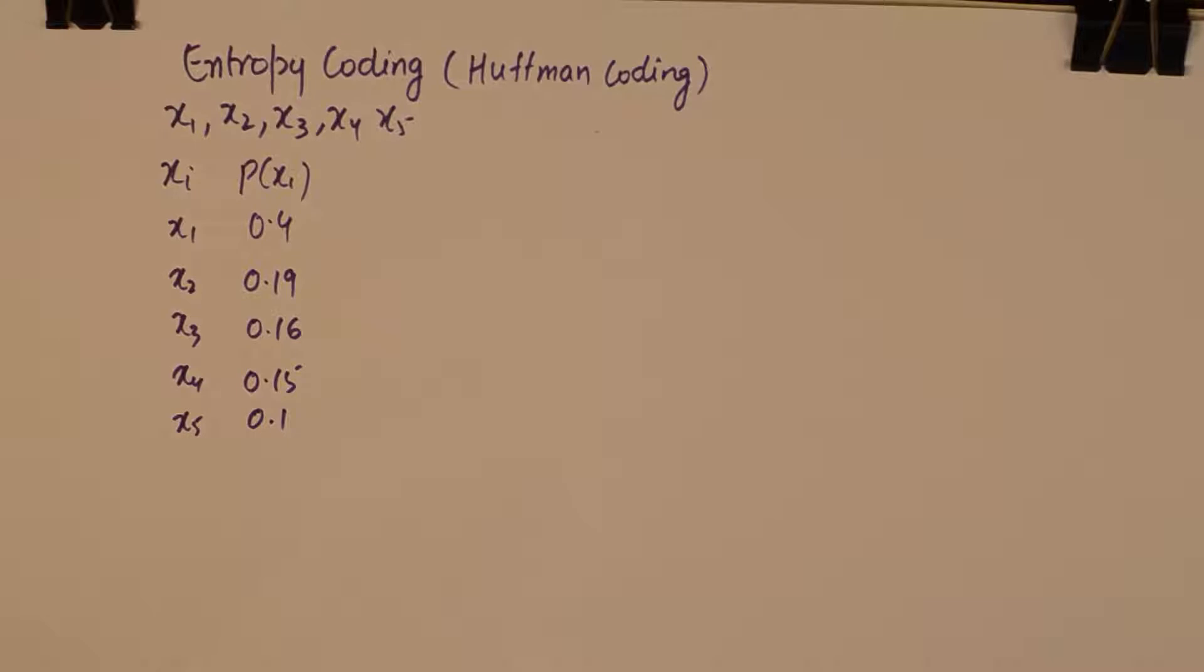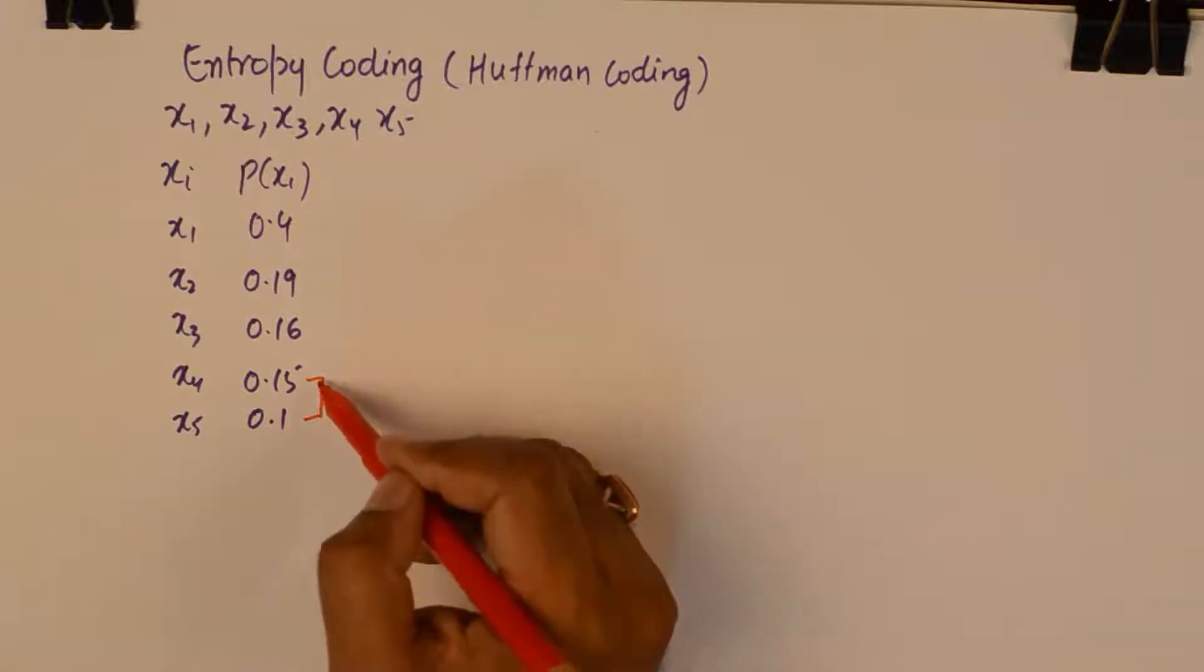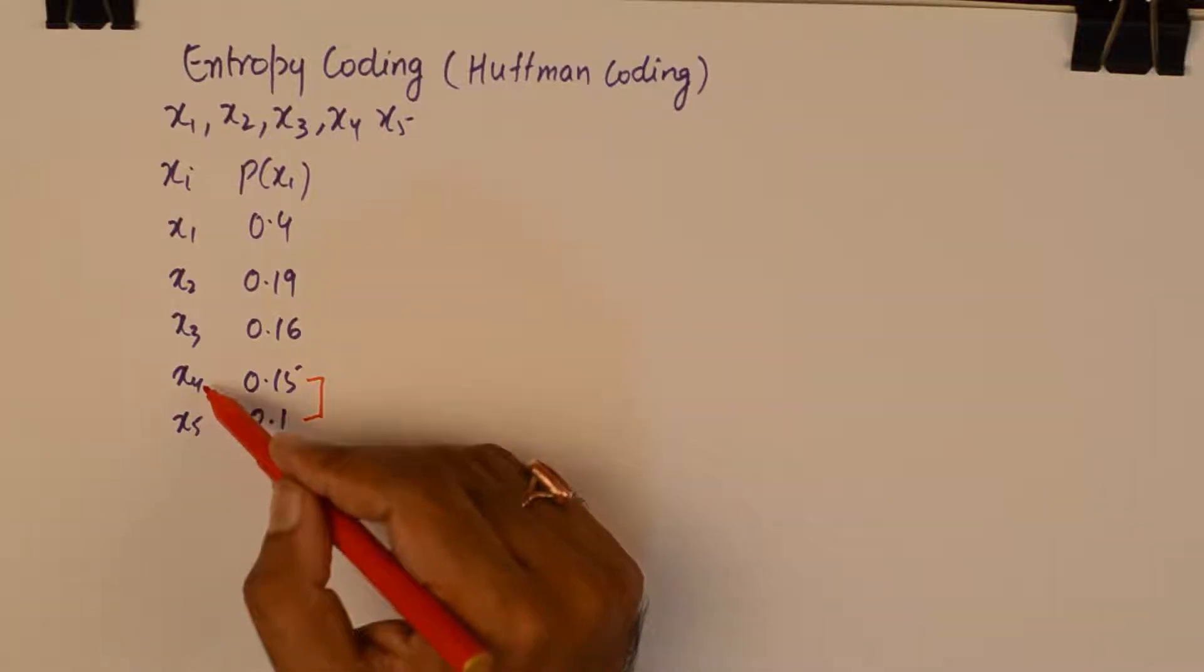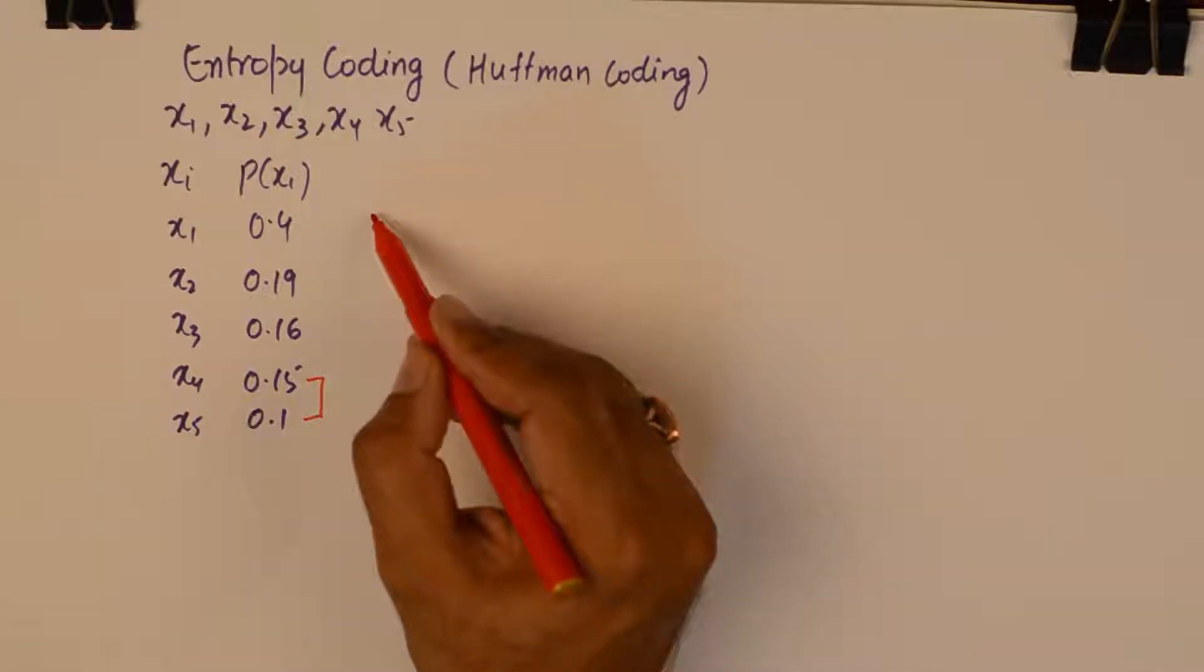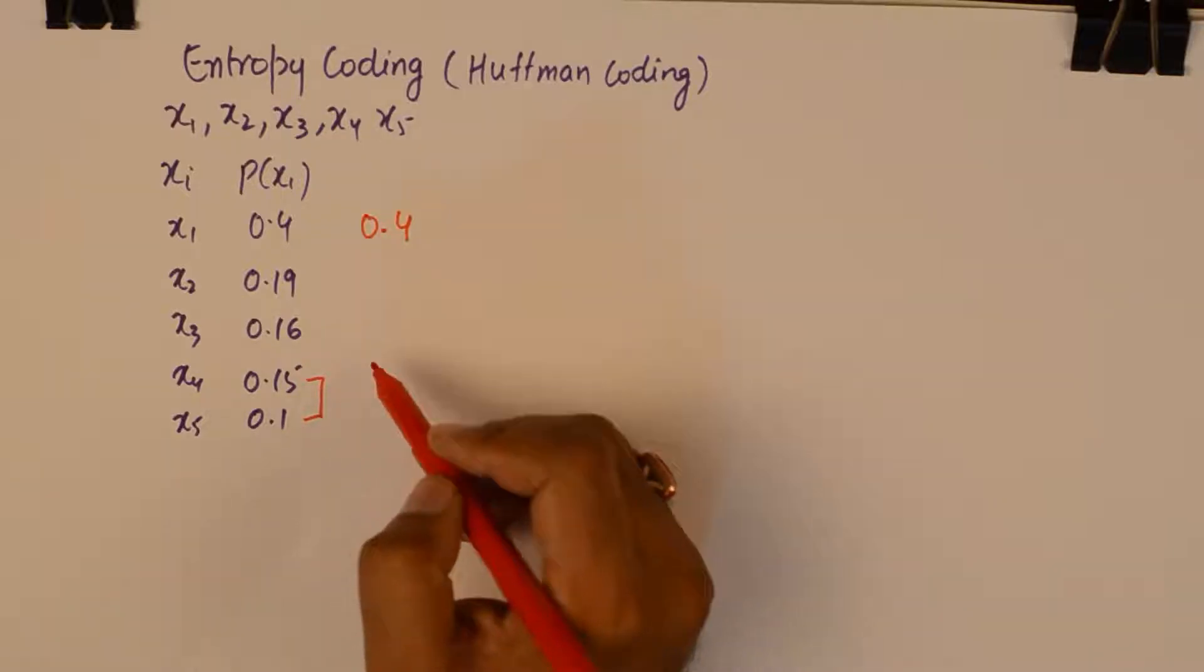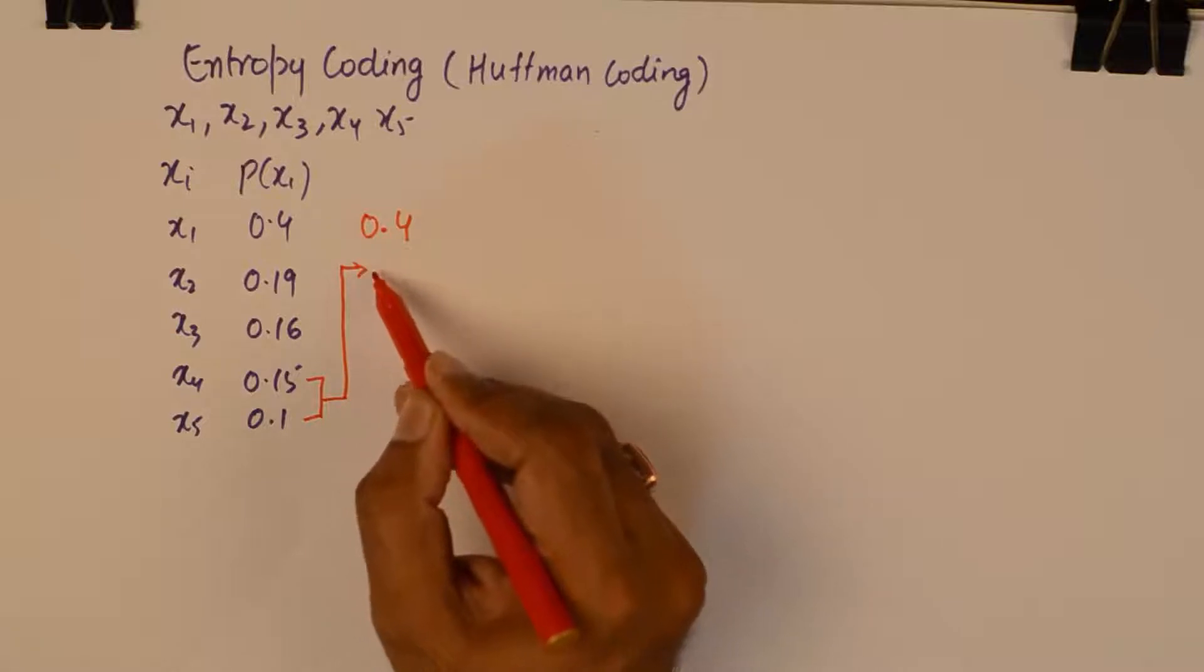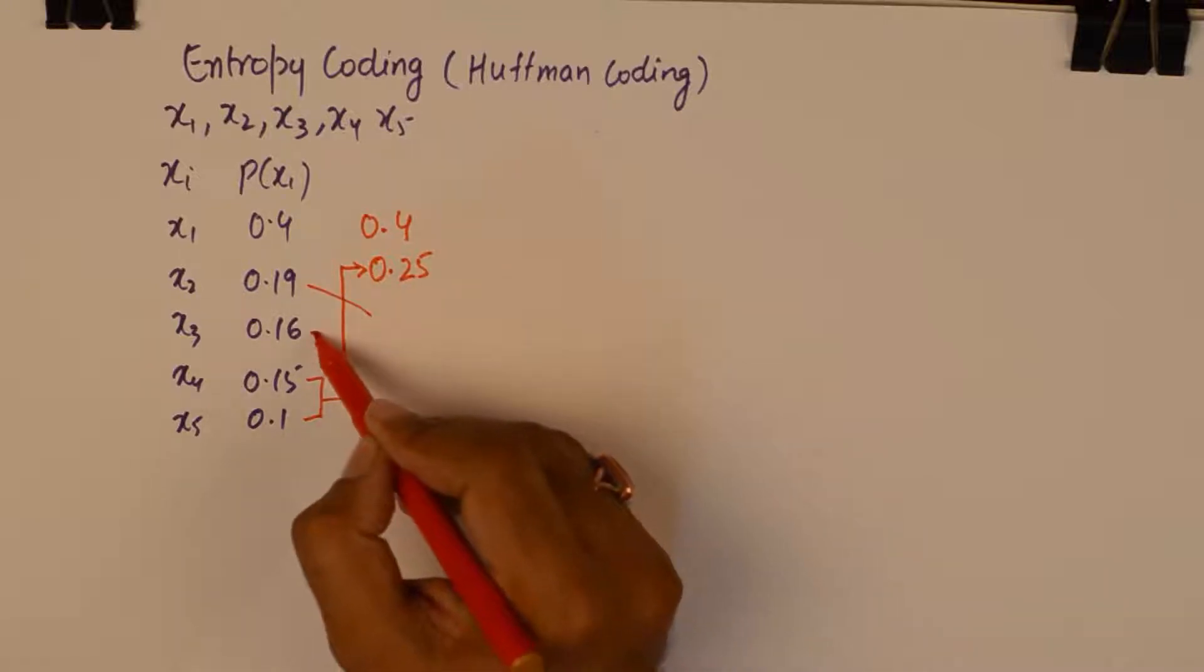Now in Huffman's coding what we need to do is we need to take the lowest two symbols with the lowest two probabilities and we need to add them up. Add the probabilities of the lowest two symbols and then we need to move them up in the position. So in the next column we will write down 0.4 and when we add 0.15 and 0.1 it reaches 0.25. So it is placed second to 0.4 and all these are shifted downwards.